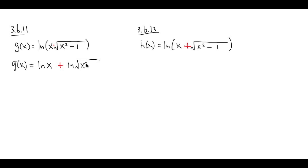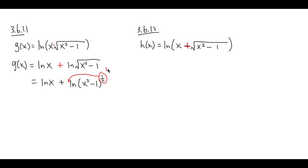So we get ln x plus ln of the square root of x squared minus 1. We can do more on this part. In calculus, you pretty much always look at a square root as something to the 1/2 power, so we can write this as ln of x squared minus 1 raised to the 1/2 power. Then, using the ln property, if you have ln of something raised to a power, you can bring the power to the front. Note that this is just a ln property — this is not the power rule, so do not subtract 1. So g of x is just the same as ln x plus 1/2 times ln of x squared minus 1.